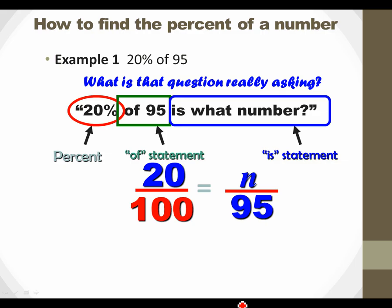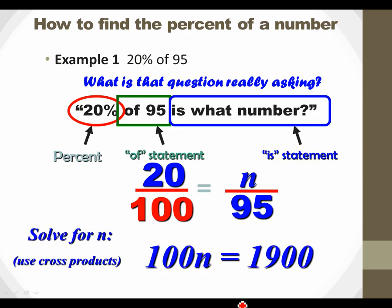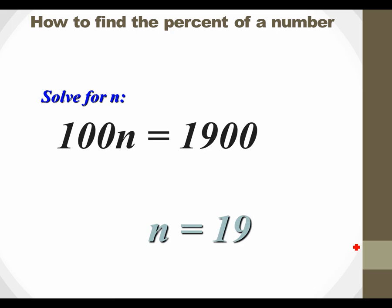And the is is the unknown. We don't know what that is. So you're going to make that a letter, X or N or whatever letter you want to use. And there's your proportion: 20 over 100 equals N over 95. Now we just have to solve it. I'm just basically using cross products. 100 times N is 100N. 20 times 95 is 1,900. So 100N equals 1,900. Then just solve it by dividing by 100, and you get 19.